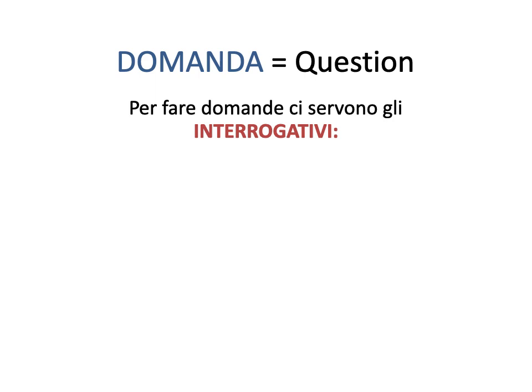The most basic one, of course, is che or che cosa — what. And you can also simply say cosa. So you have three possible alternatives: che, che cosa, or cosa. Notice the soft S in cosa. All of those mean 'what.'